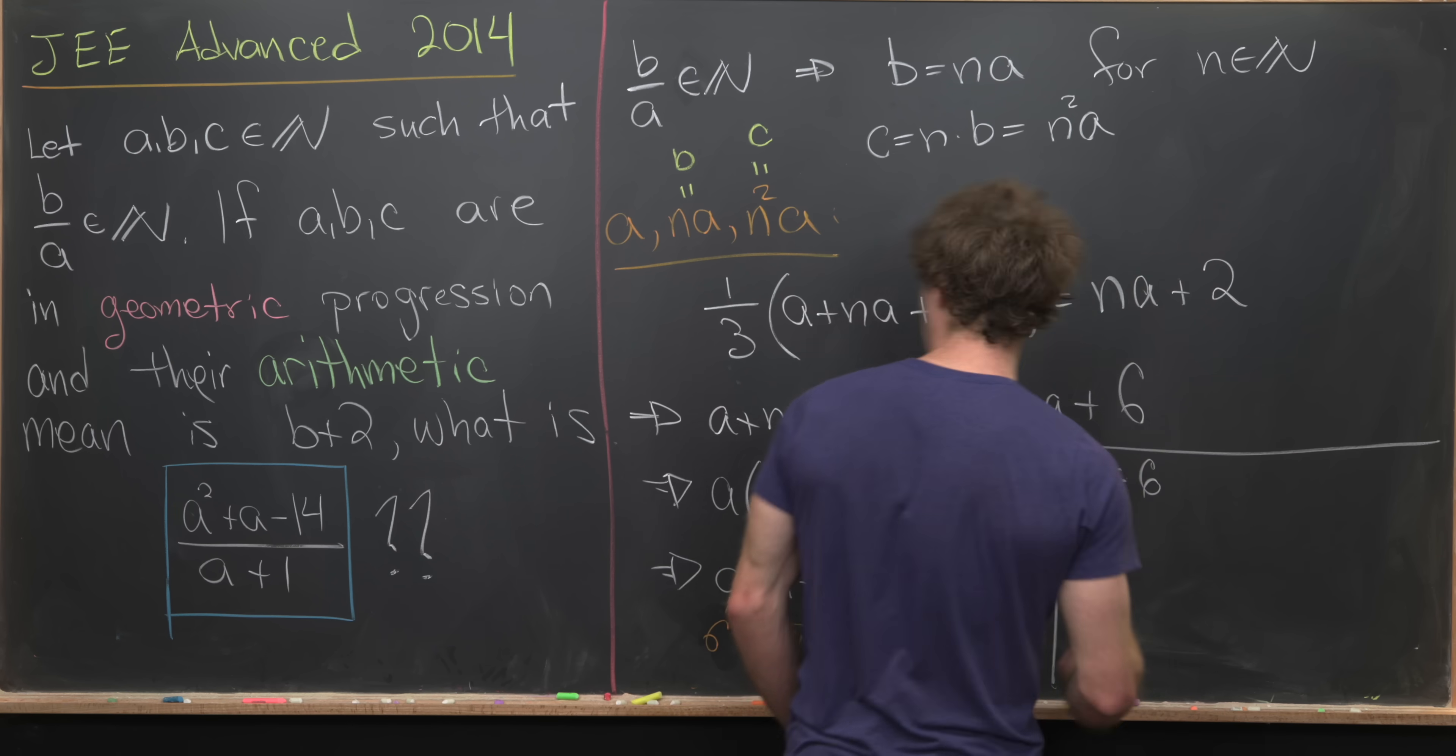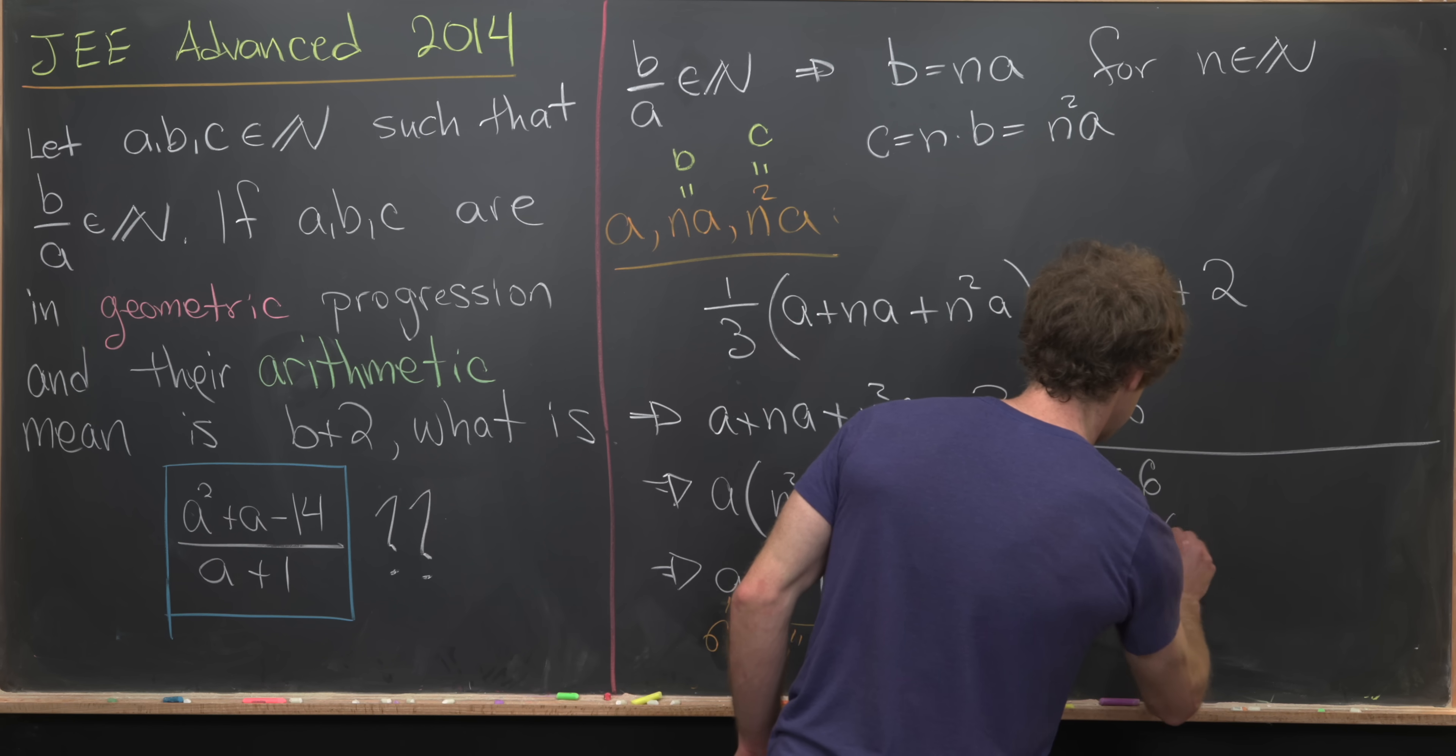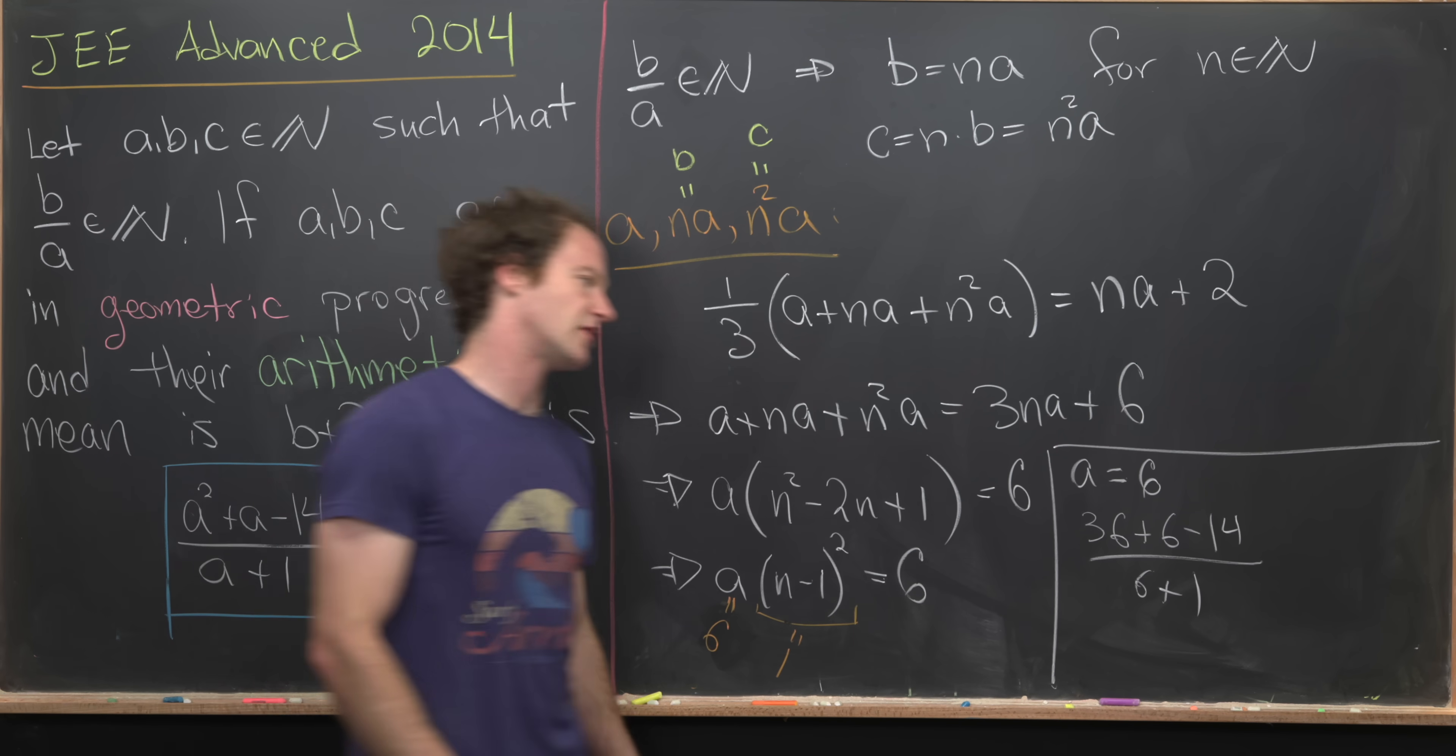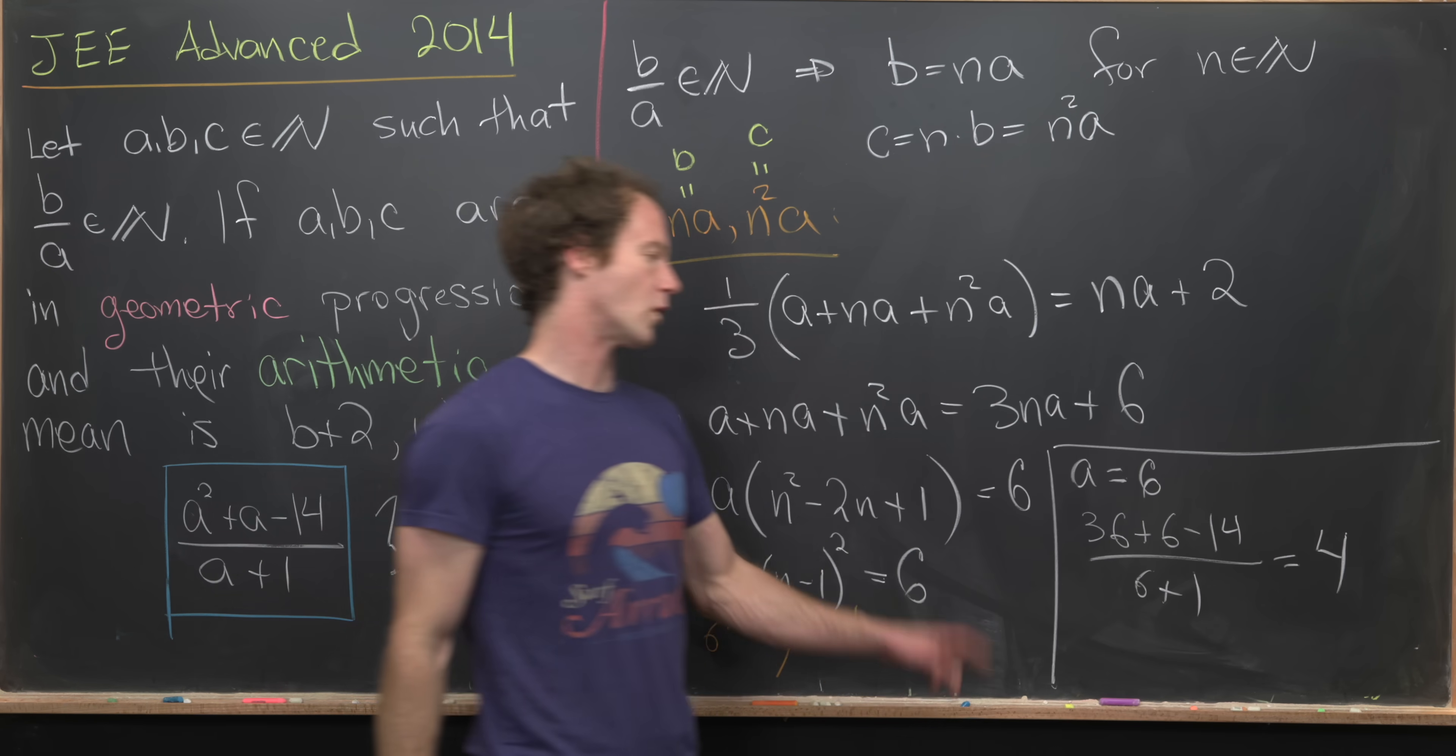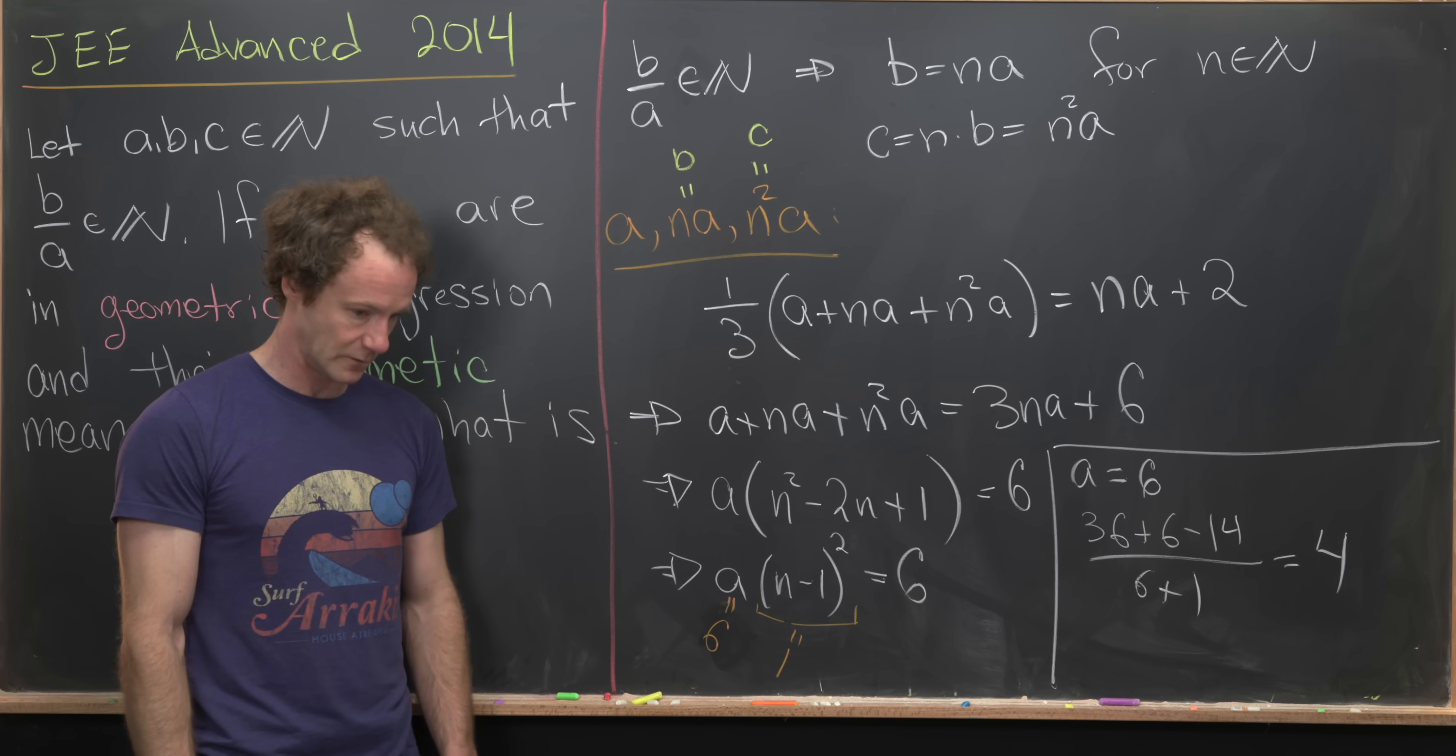But now if A is equal to 6, then our quantity over here is equal to 36 plus 6 minus 14 over 6 plus 1. But now that's a pretty easy calculation and what we'll get here is that the number is 4. So we'll have 28 over 7, which is obviously 4.